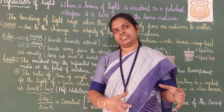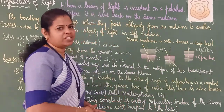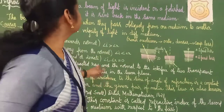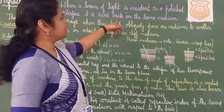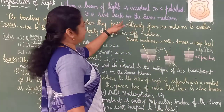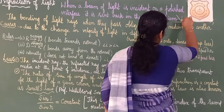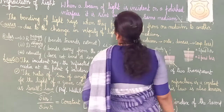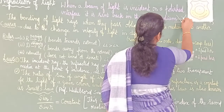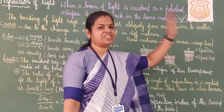While introducing reflection, I told you: a beam of light is incident on a polished interface and is sent back in the same medium. When light is incident on a polished surface, it is sent back in the same medium. You have seen this — angle of incidence is equal to angle of reflection. So we have studied about reflection.